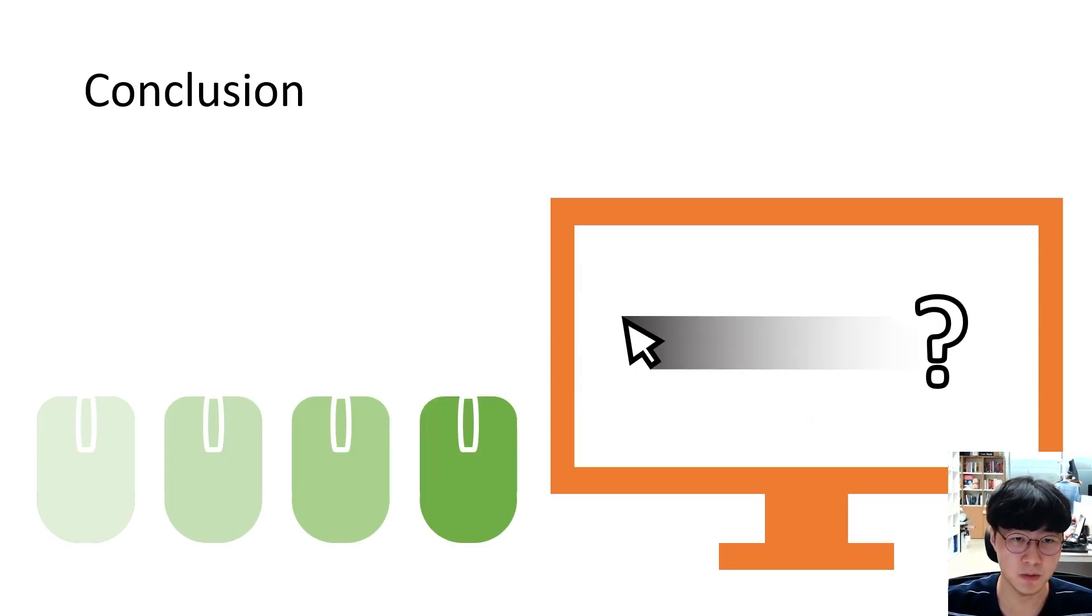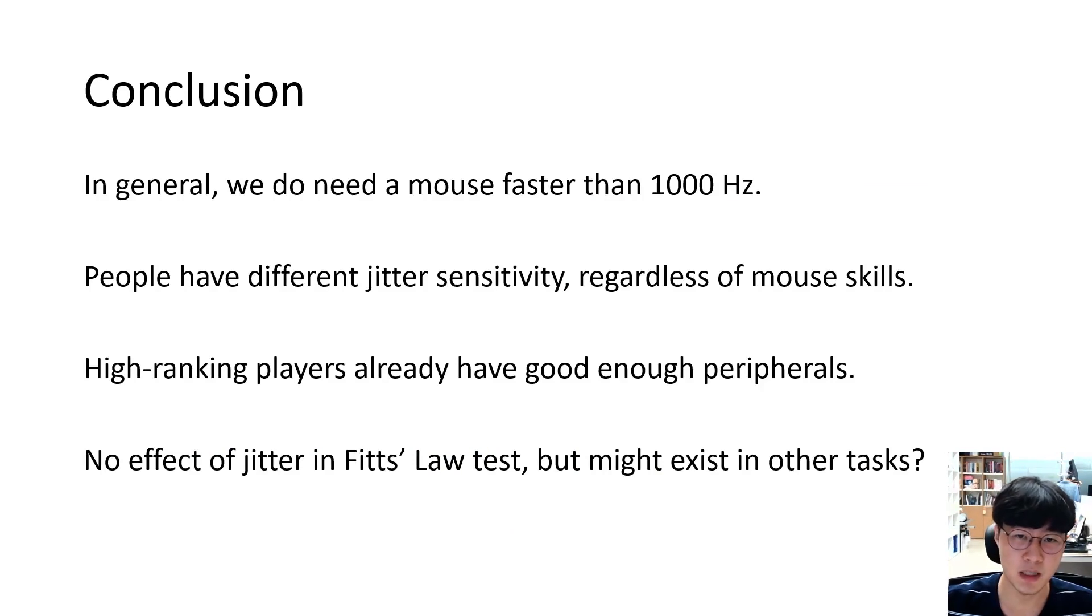To conclude, we found out that we might need a mouse with a slightly higher polling rate than the current de facto standard mouse polling rate limitation at 1000 Hz. Subsequently, we suggest people have different sensitivity towards the size of jitter. However, mouse control skills are not necessarily correlated to it.